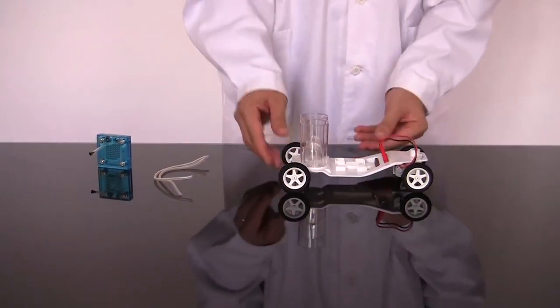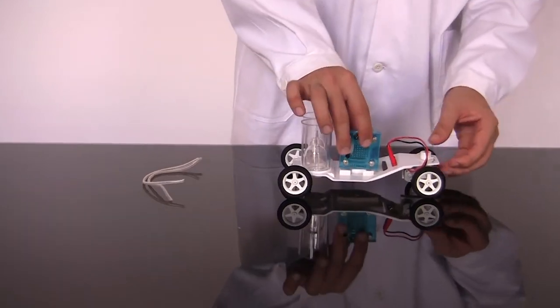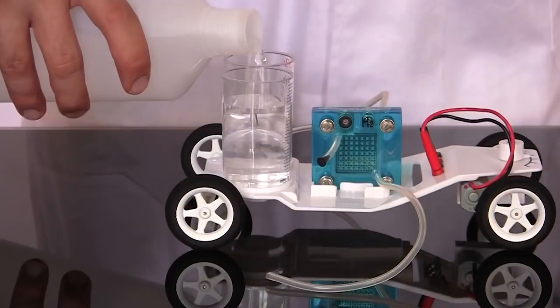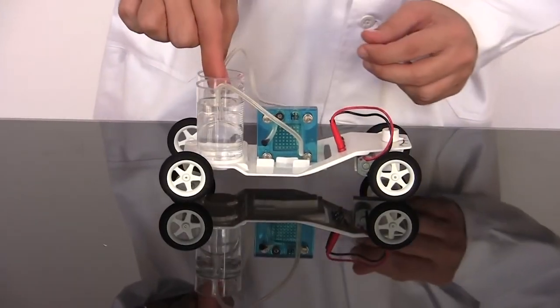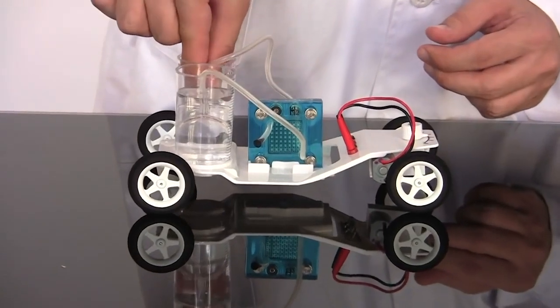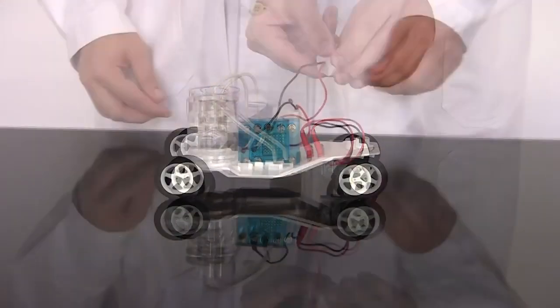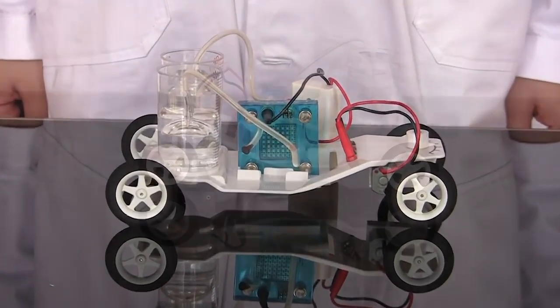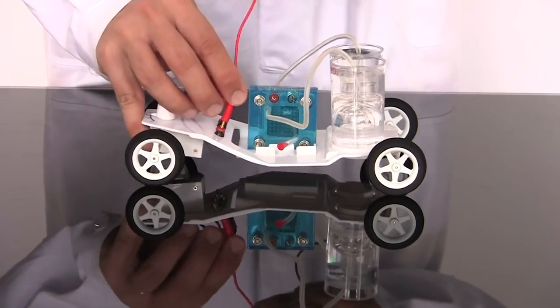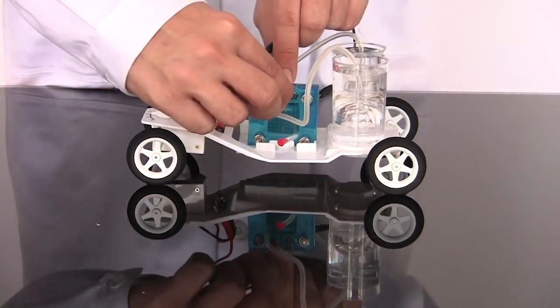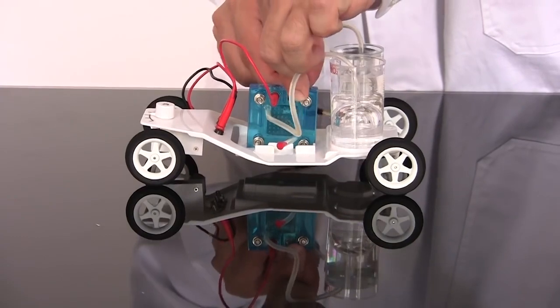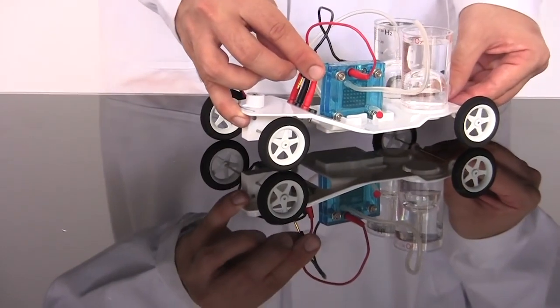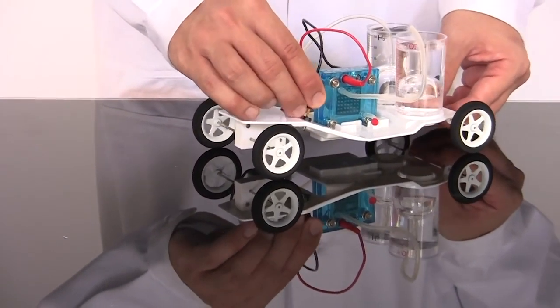The reversible fuel cell works with the car chassis as well. The cylinders mount on the rear of the car, while the fuel cell attaches to the middle. Fill the cylinders with distilled water and connect them to the fuel cell as before. Then attach the battery pack to generate hydrogen gas. When the cylinders are full, disconnect the battery pack and use the hydrogen to power the car. Students can modify their car to try to get it to be more efficient. Is there a minimum amount of water they need to put into the cylinders? Can they lighten the car in some way?